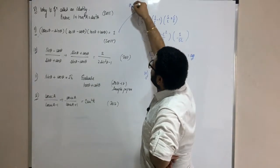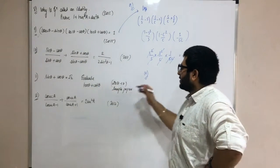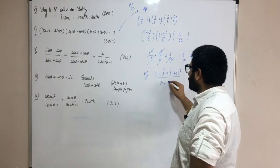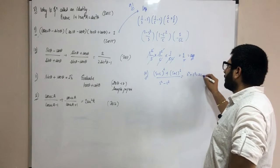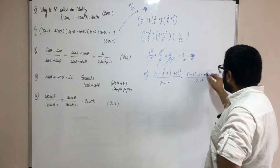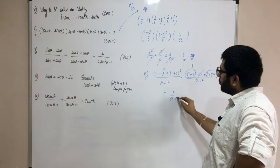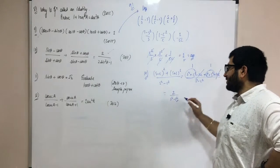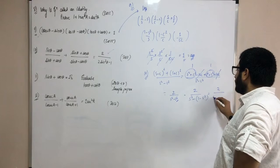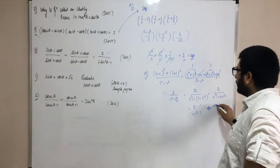Now let's look at the tenth question. For Q10: (sine minus cos)/(sine plus cos) + (sine plus cos)/(sine minus cos). We take LCM: (sine minus cos) whole squared plus (sine plus cos) whole squared, all upon (sine squared minus cos squared). Expanding: sine squared plus cos squared minus 2 sine cos plus sine squared plus cos squared plus 2 sine cos upon sine squared minus cos squared. This simplifies to 2 by (2 sine squared minus 1), which is your final answer — that is your RHS, and this is also proved.